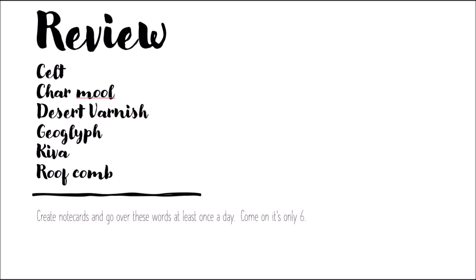A quick review of our vocabulary words for Arts in the Americas up to 1300 CE: please know what a Celt is, Chakmul, Desert Varnish, Geoglyph, Kiva, and Roof Comb. I would recommend creating note cards or using Quizlet and going over these words at least once a day, because there are only six words to know.